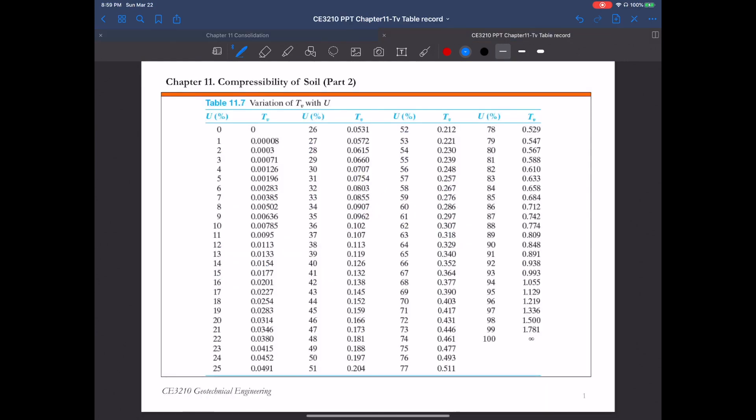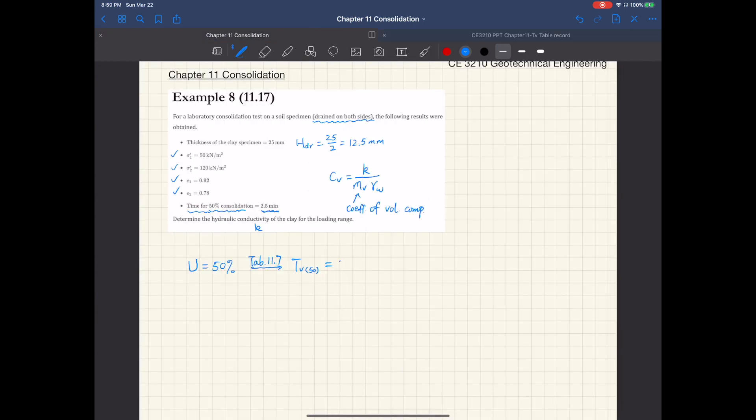If you look at this table here, when U is 50 percent, the corresponding t sub v is 0.197. And we also know that time t is 2.5 minutes. So from this we can calculate the coefficient of consolidation, c sub v.